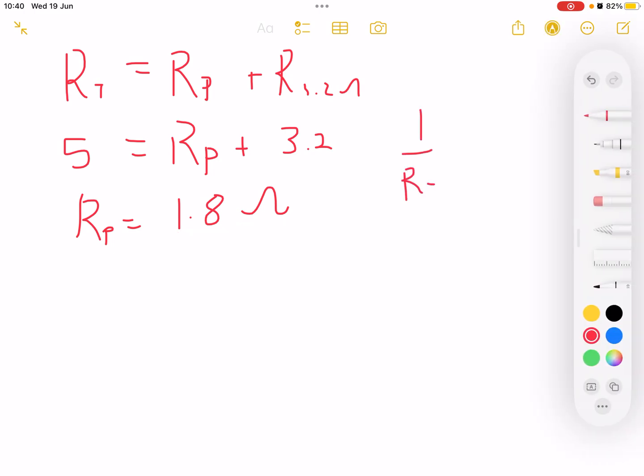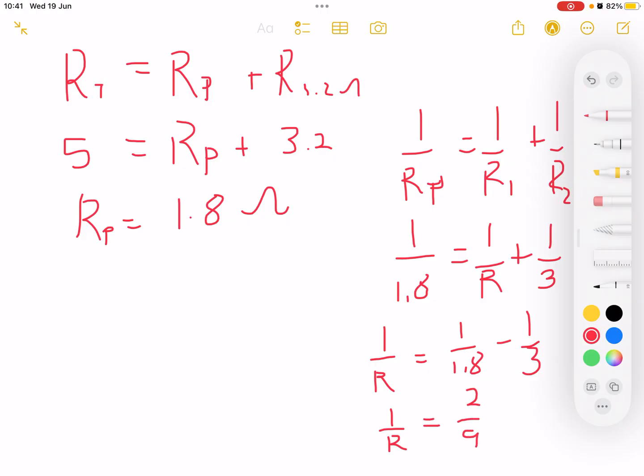But how is that R parallel calculated? R parallel is 1 over Rp equals 1 over R1 plus 1 over R2. This is 1 over 1.8 equals 1 over resistor R plus 1 over 3 ohms. We take 1 over R to be equal to 1 over 1.8 minus 1 over 3. Then 1 over R equals 2 over 9. We can do cross multiplication or the inverse, and we get that resistor R equals 9 over 2, which equals 4.5 ohms.